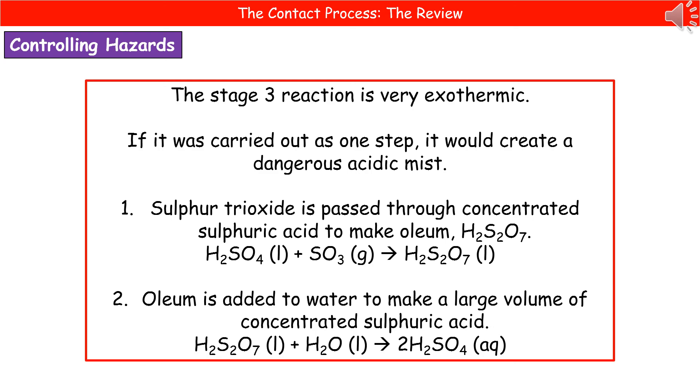The last thing to bear in mind is that when we're talking about stage 3, that is an incredibly exothermic reaction. If we were literally to take our last reactants, so our sulfur trioxide and water, and just mix them together, what we'd end up with is basically a giant acidic mist. Acidic mist is generally bad for everyone's health, so we don't want to create an acidic mist. To bypass that, we carry it out as a two-step reaction.